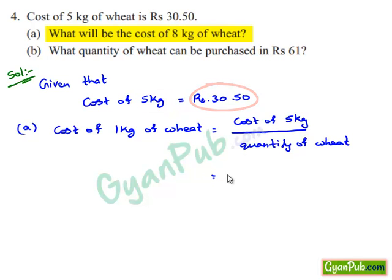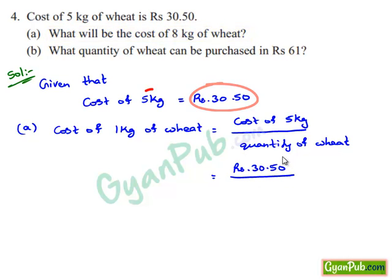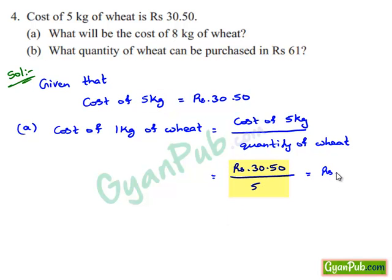Cost of 5 kg of wheat is Rs. 30.50. 30.50 divided by 5 gives cost of 1 kg of wheat as Rs. 6.10.